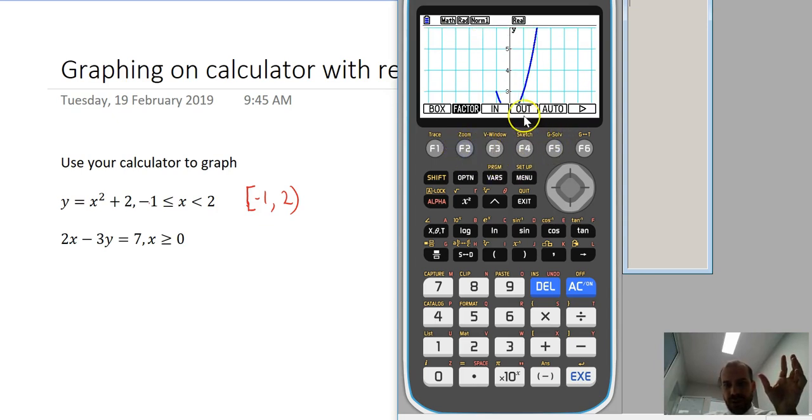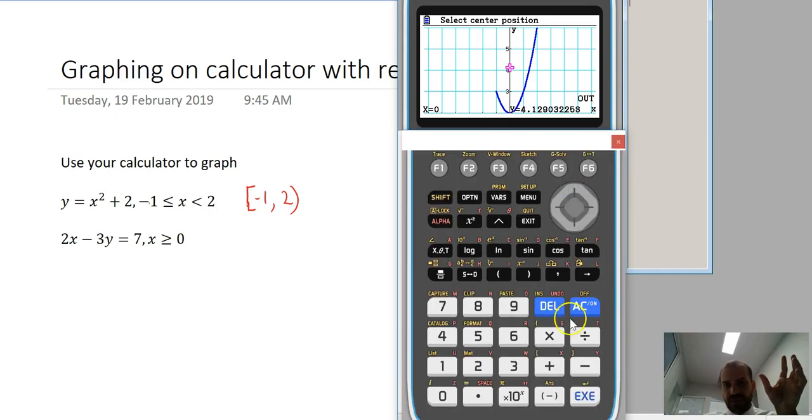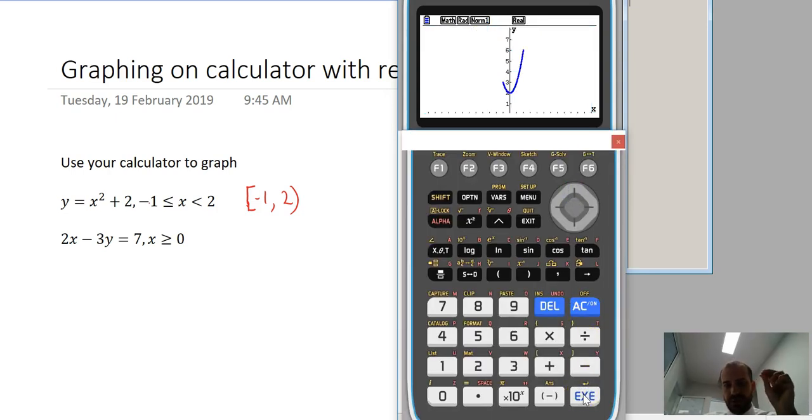Or you can go to the zoom button and click out. And then move this guy here, this bit here. That's where it'll zoom around. Then you can just click execute and it'll zoom out for you.